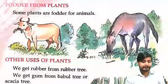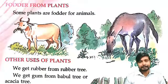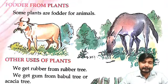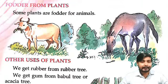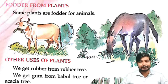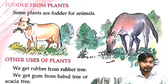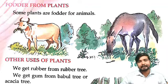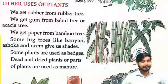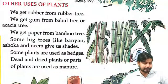Next, fodder from plants. Aur isi plants se kai aise jaanwar hain jo plant khaake woh zinda rehte hain. Some plants are fodder for animals. Kai sare aise plants hain jo animals unko khaate hain, jaise ki cow, horse — yeh sab kya khaate hain? Grass khaate hain.